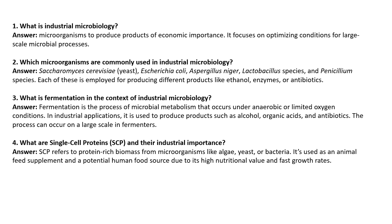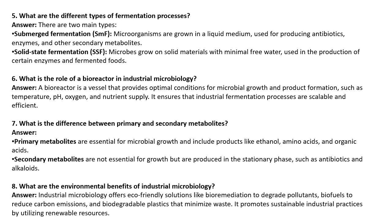What are the different types of fermentation processes? Submerged fermentation and solid state fermentation are the main types. Depending on the product and reactor, you may also have continuous or batch processes. Submerged fermentation is where microorganisms are grown in a liquid medium, used mostly for antibiotic or enzyme production. Solid state fermentation is where microbes are grown on solid material with minimal free water, used for certain enzymes and fermented foods.